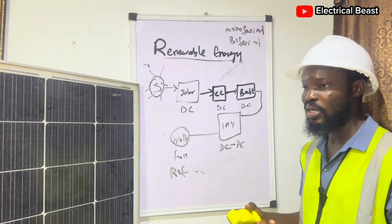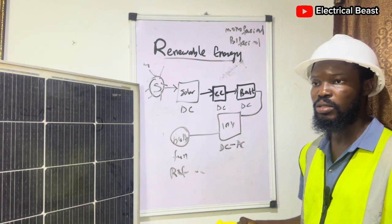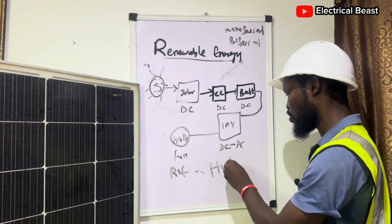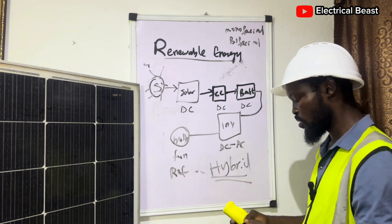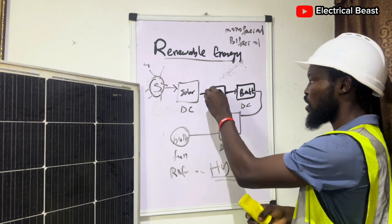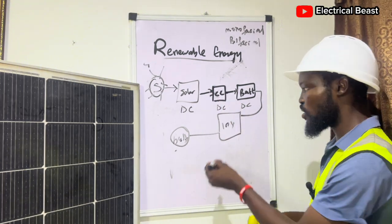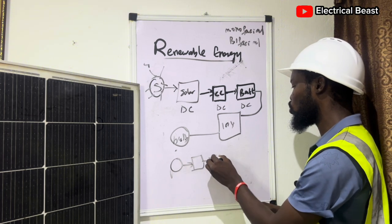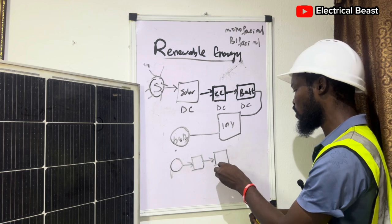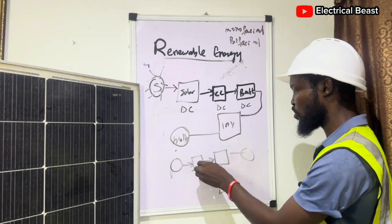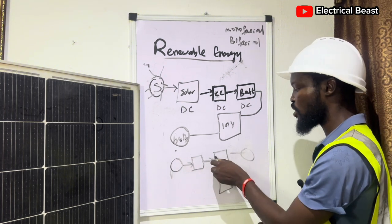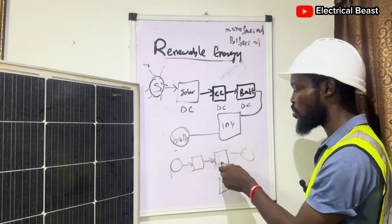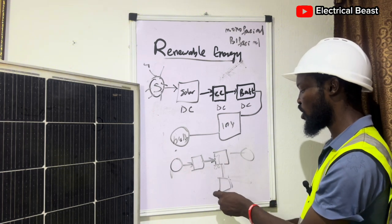For inverters we have different kinds: we have pure sine wave inverters, modified sine wave inverters (also called sachet inverters), hybrid inverters, and transformer-based inverters. For a hybrid system you don't need a charge controller because the charge controller is inbuilt inside the inverter. From the solar panel there is a PV input on the inverter that controls the current and voltage going into the battery for charging and discharging, and the inverter also converts energy stored in the battery to AC for the loads.